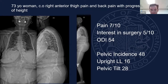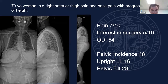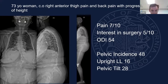She's got a pelvic incidence of 48, which is relatively low — average is about 55. Her upright lumbar lordosis is 16 degrees, and she stands with a pelvic tilt of 28 degrees. She has a high pelvic tilt, which you can see through her vertical sacrum, plus flexed knees and hips. She has engaged multiple compensatory mechanisms, including some thoracic spine straightening, which is action of the spinal extensors to maintain horizontal gaze.